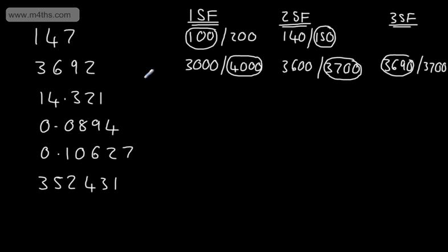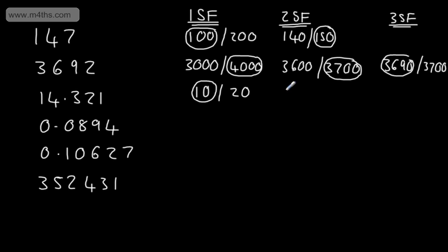Now let's do 14.321. If we're rounding to two significant figures, this is to the nearest unit. So we could have 14 or we could have 15.